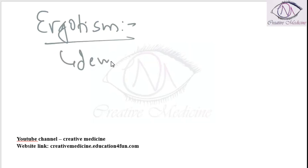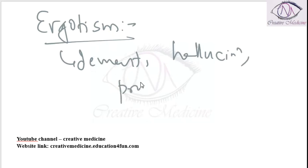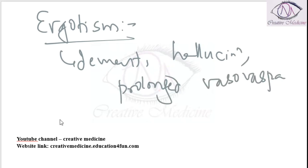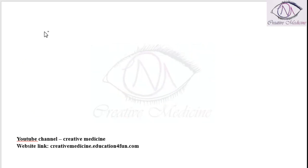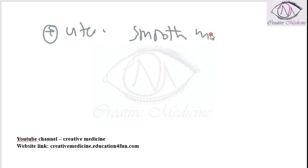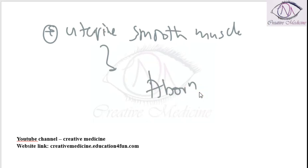In ergotism, the patient presents with dementia, florid hallucinations, and prolonged vasospasm. Gangrene may also be seen, especially with erythromyalgia. There can also be stimulation of uterine smooth muscles, which can result in abortion if the woman is pregnant.